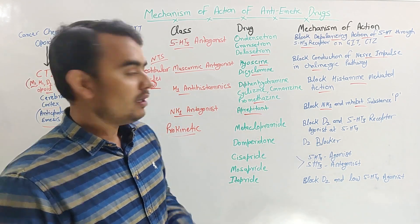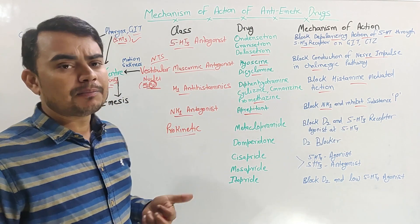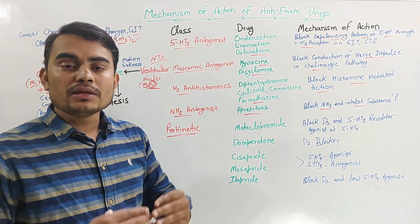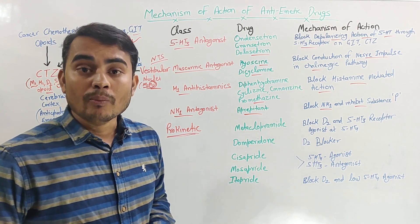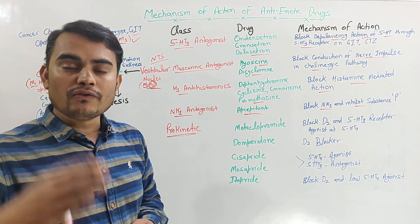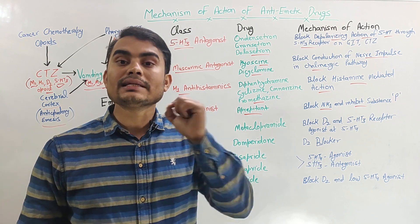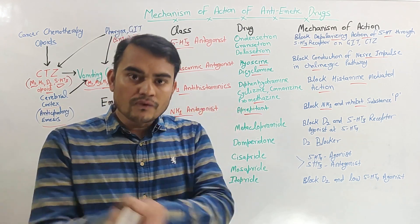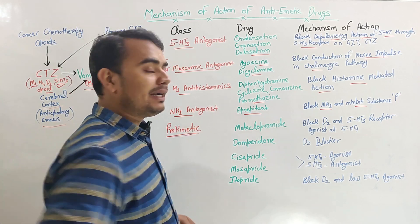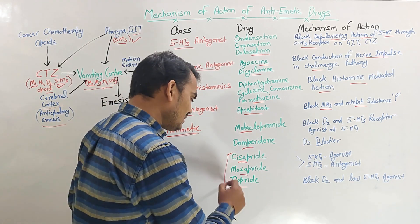The next important class of antiemetic drugs is prokinetic drugs. Prokinetic drugs, as the name indicates, stimulate or increase peristalsis movement, which increases gastrointestinal transit time and helps move food out. These drugs increase gastric emptying, moving food from the gastric region to the intestinal region, thereby decreasing emesis.